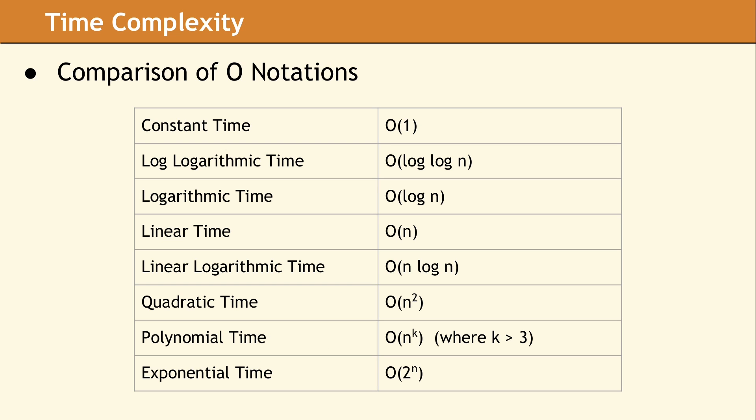Since the big O notation is the most commonly used, this is the one C++ programmers should focus on. Almost every algorithm can be reduced to one of the time complexities listed in this table.